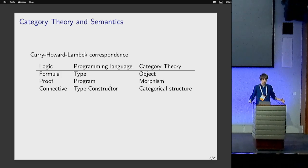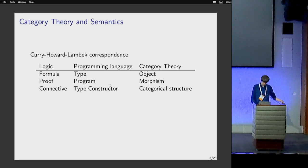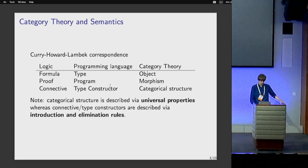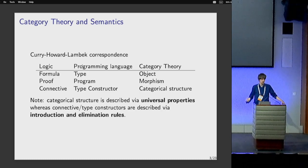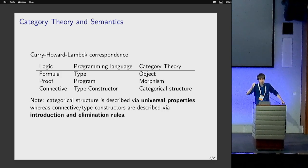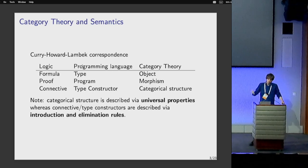There is an interesting linguistic difference between them. In logic or programming languages, we always use introduction or elimination rules — how to form a term of a type and how to eliminate it. In category theory, we use universal properties: suppose we have a morphism like this, satisfying a requirement, then we get a unique morphism such that some condition holds. But essentially they are the same.